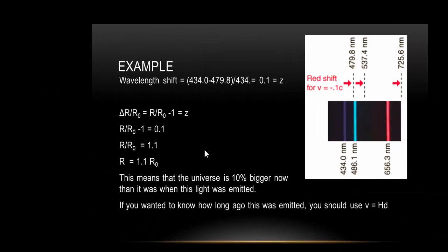So what would happen if you wanted to find out how much time ago this was emitted? By using the redshift, you find out what the speed of the source is. From using Hubble's equation, if you know the speed, you can work out the distance.